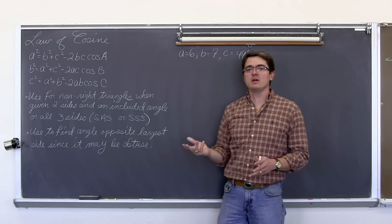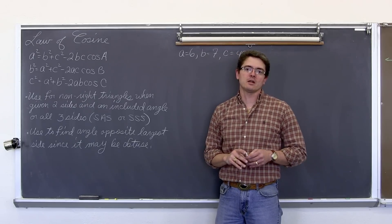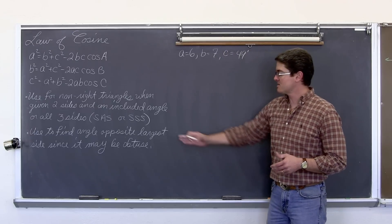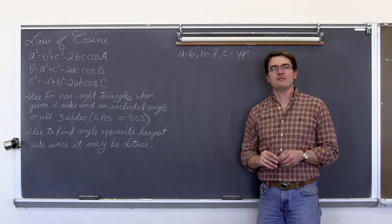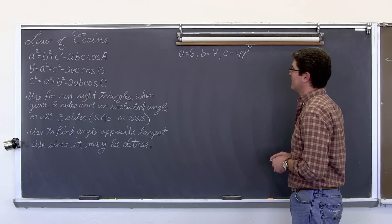So again, if that angle was 97 degrees and you tried to do law of sine, you would actually get 83 degrees from your calculator, which would be incorrect. So when you want to find that largest angle, it is always suggested to use law of cosine to find that in case it is obtuse, you will get the correct answer from your calculator.